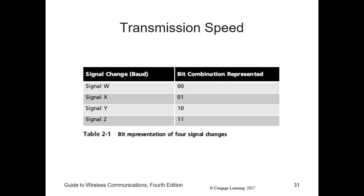With later modems, it became possible for a change in signal — one baud — to represent more than one bit. The most advanced telephone line modems transmit at a maximum of 4,800 baud, which is the maximum number of signal changes a typical phone line can support. However, because each change represents more than one bit, along with data compression, modems can actually transmit at speeds up to 33.6 Kbps and receive up to 56.2 Kbps.